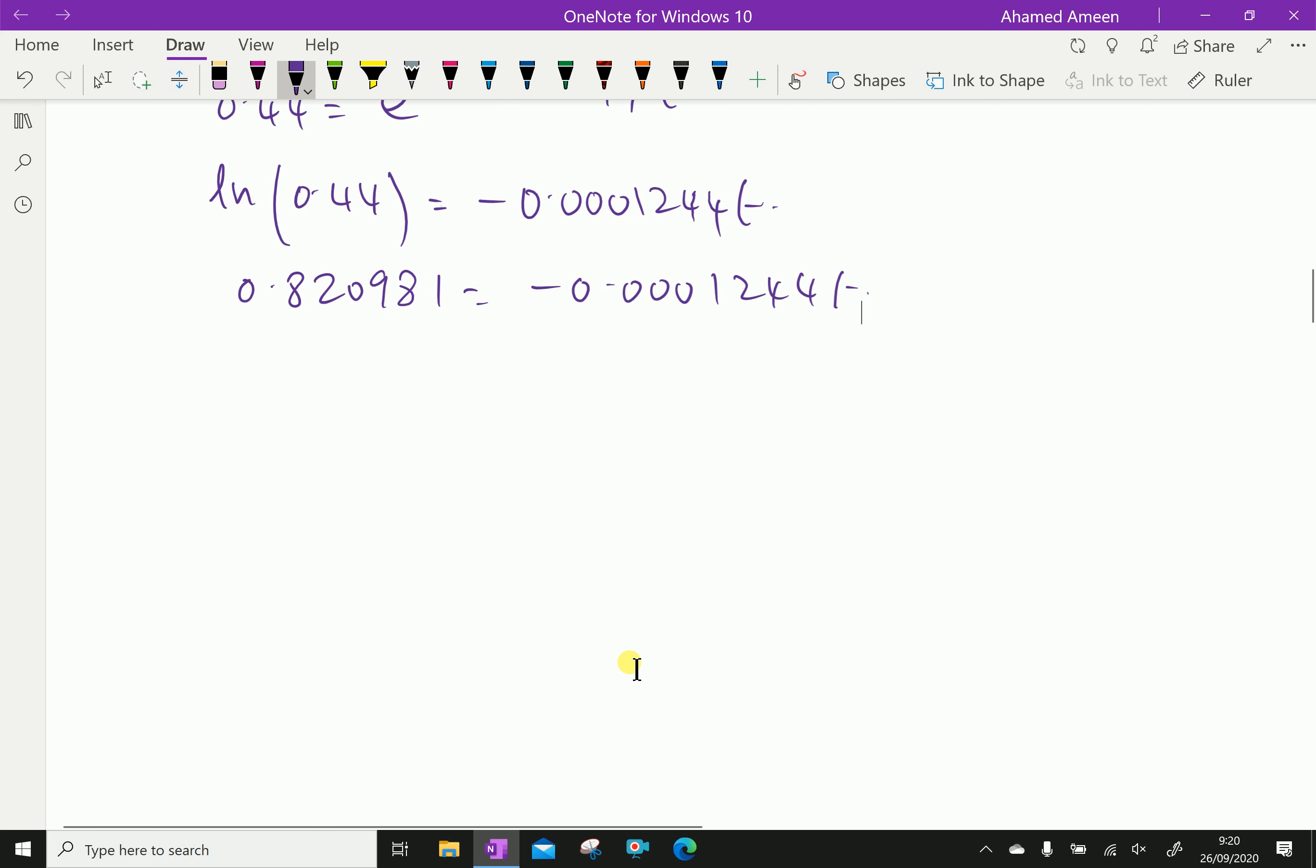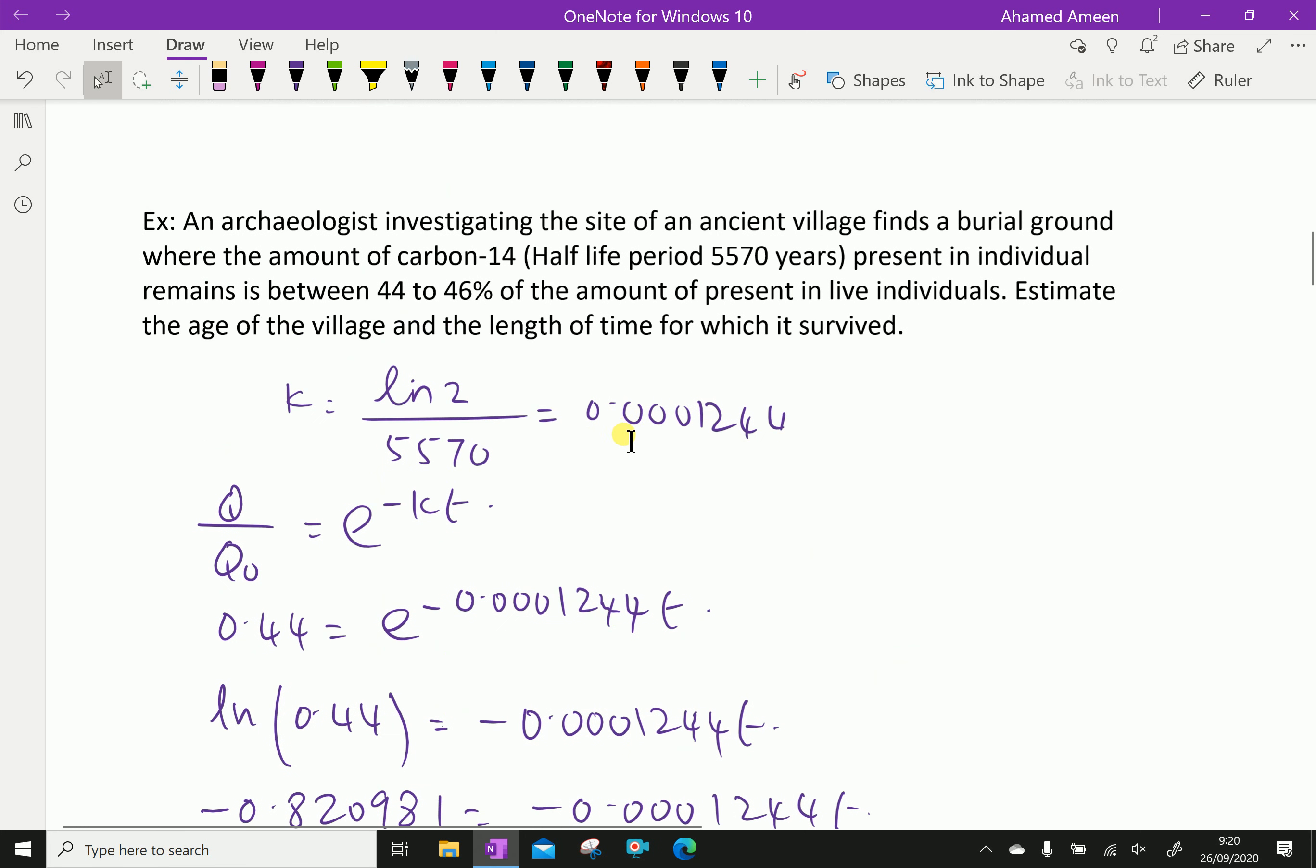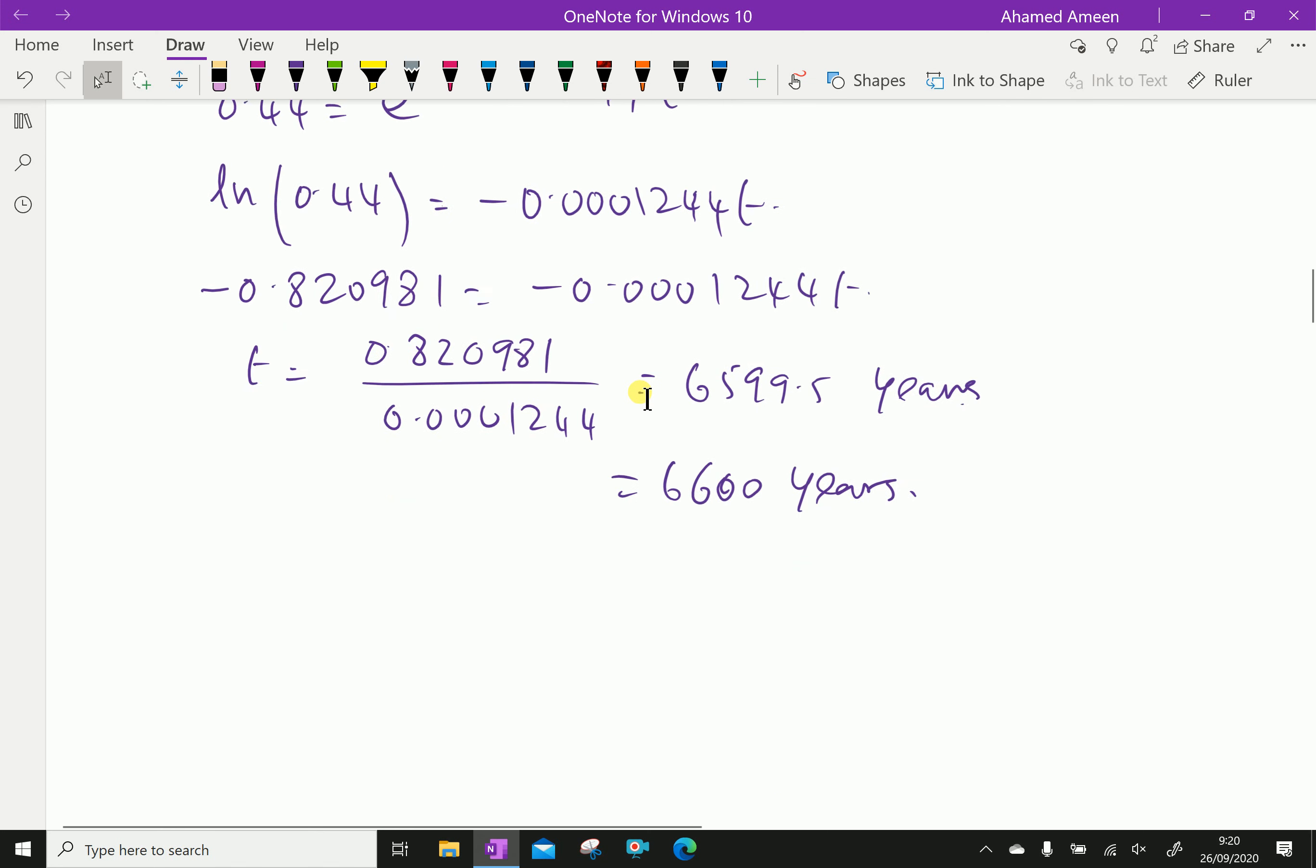Then T equals 0.820981 over 0.0001244, which gives approximately 6599.5 years. We can consider this 6600 years. Therefore, the age of the village is 6600 years before they left.